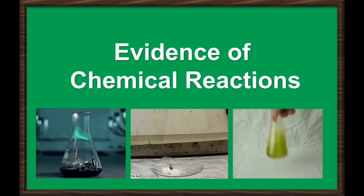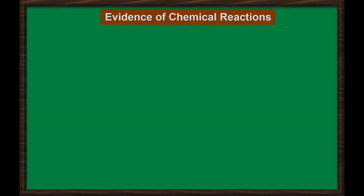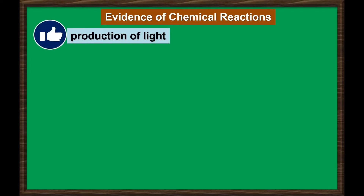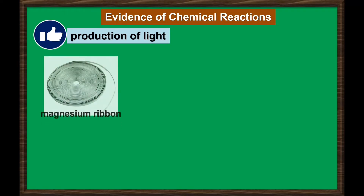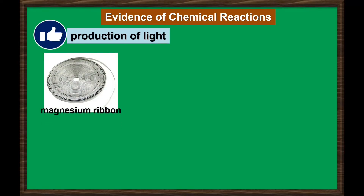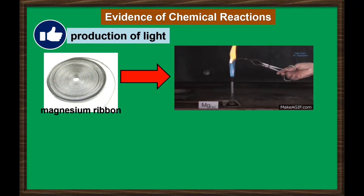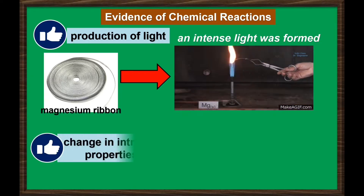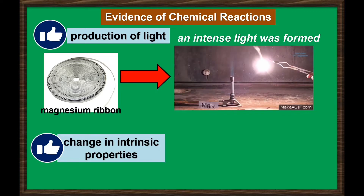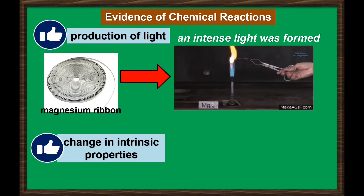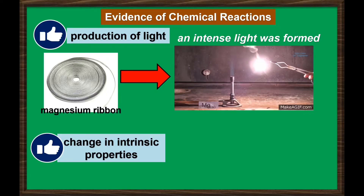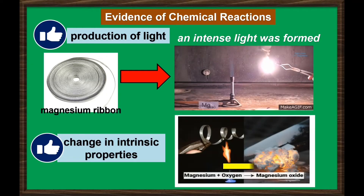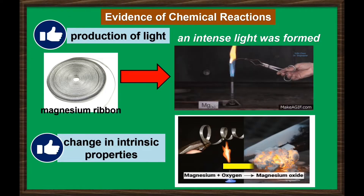Evidence of Chemical Reactions. One evidence of chemical reaction is the production of light. For example, if you place a strip of magnesium ribbon over a flame, it burns with oxygen and an intense light will be formed. Next is a change in intrinsic properties like color or odor, which is another evidence that a chemical reaction happened. Notice that after burning the magnesium ribbon, there is a change in color or even in its texture.